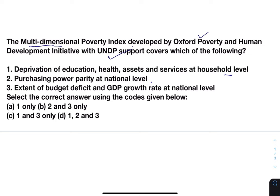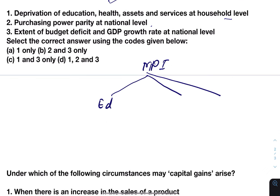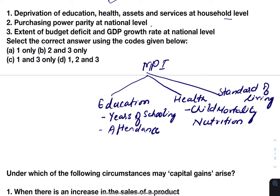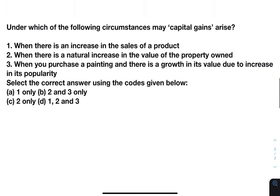The multi-dimensional poverty index, called MPI, bases its estimation on three factors. First, education, which includes years of schooling and attendance in school. Second, health, measured in terms of child mortality and nutrition. Third, standard of living, measured in terms of electricity, sanitation, drinking water, flooring of the house, cooking fuel, and asset ownership. Equal weights are assigned to all three, so the answer will be option one only.